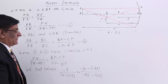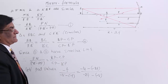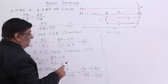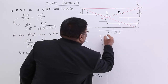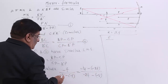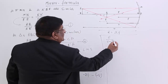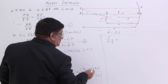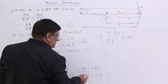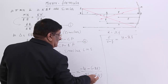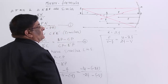You will find there are so many minuses. No problem — both sides we will multiply with minus, so all the minuses will become plus. So this becomes: F upon (V − F) is equal to (U − 2F) upon (2F − V). This is the relation.